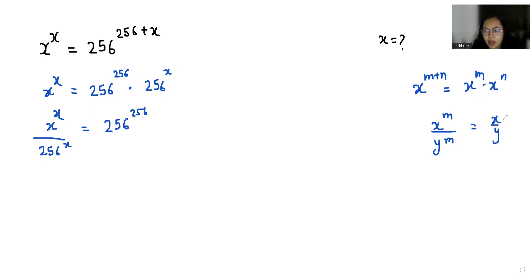Using another exponent rule, x^m divided by y^m can be written as (x/y)^m. So (x/256)^x equals 256^256.